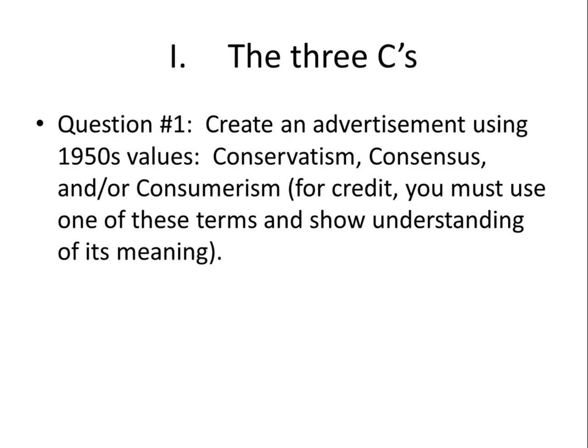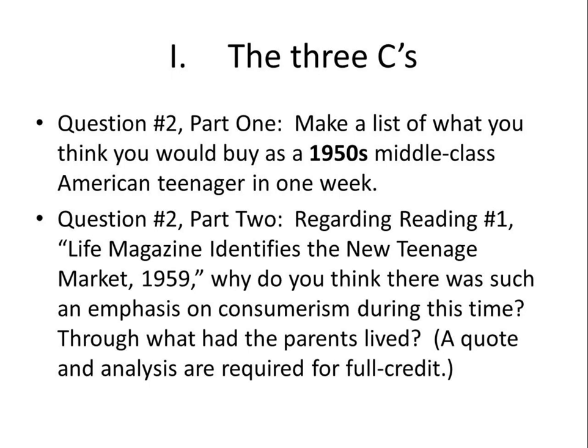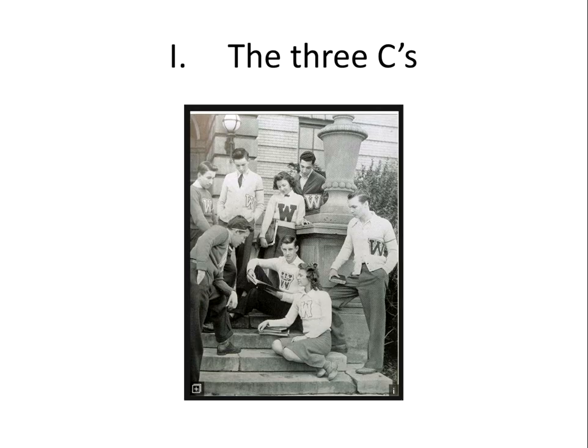Question two, part one: make a list of what you think you would buy as a 1950s middle-class American teenager in one week. They did have money, and they're going to the mall — not a car, that's too expensive, but maybe records or makeup. Then look at Reading One, 'Life Magazine Identifies the New Teenage Market.' Why do you think there was such an emphasis on consumerism during this time, and through what had the parents lived? A quote and analysis are required.